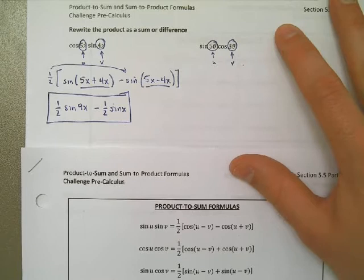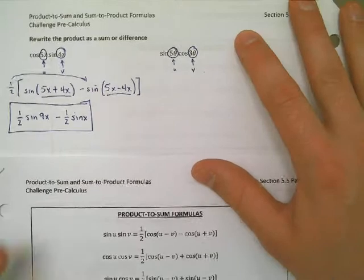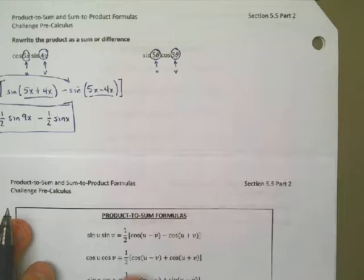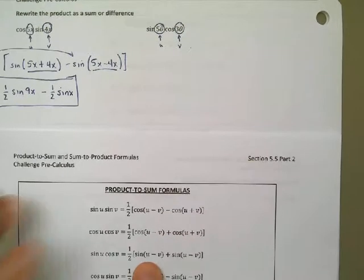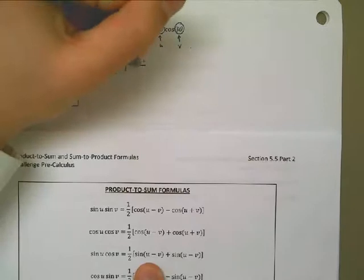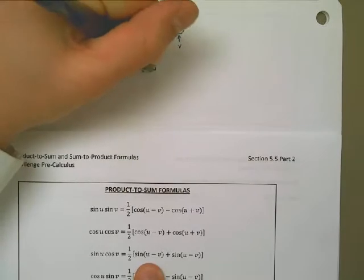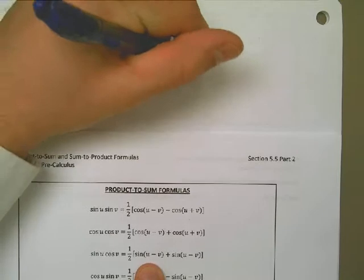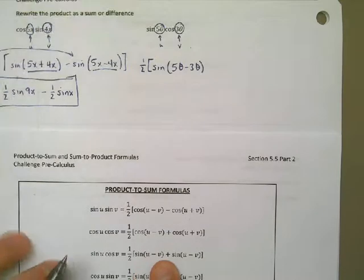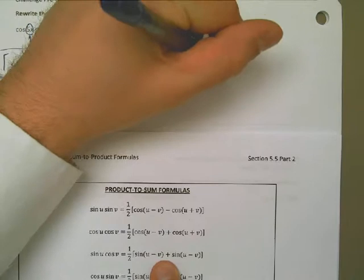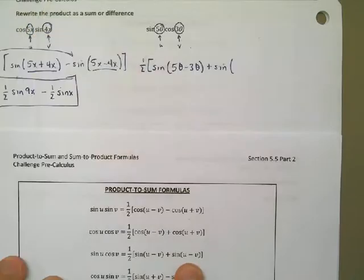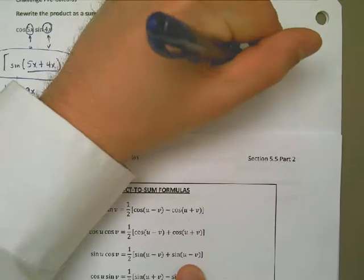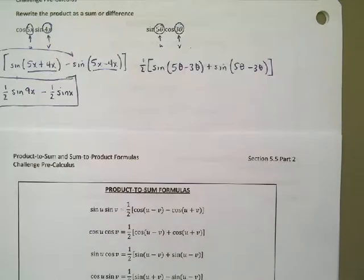Okay, same thing over here. Slightly different formula. But I'm going to do sine U cosine V, which means I just need to use, then, the formula right above it. So I can say, then, this is one half sine of 5 theta minus 3 theta, U minus V, plus the sine of U minus V again, 5 theta minus 3 theta. Now it's just a matter of simplifying.